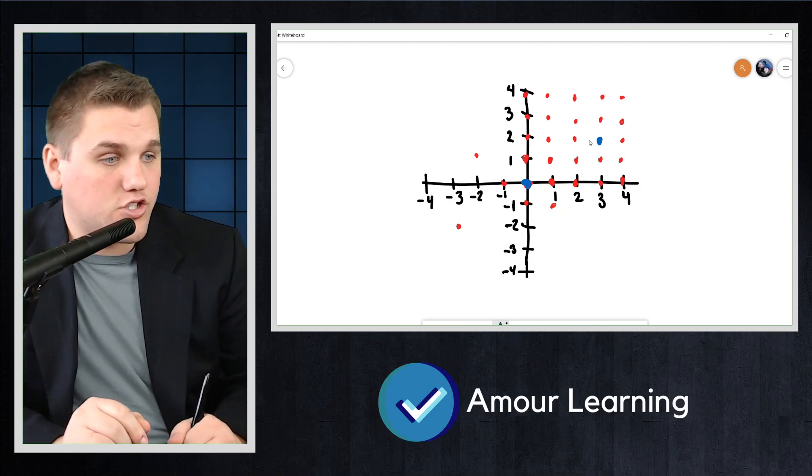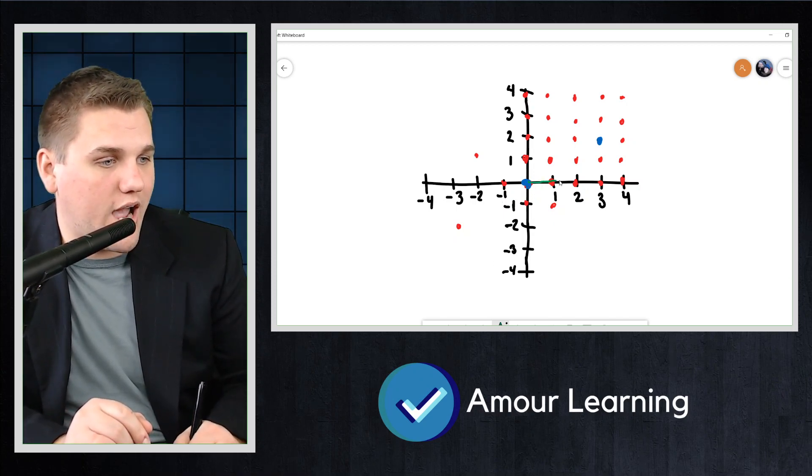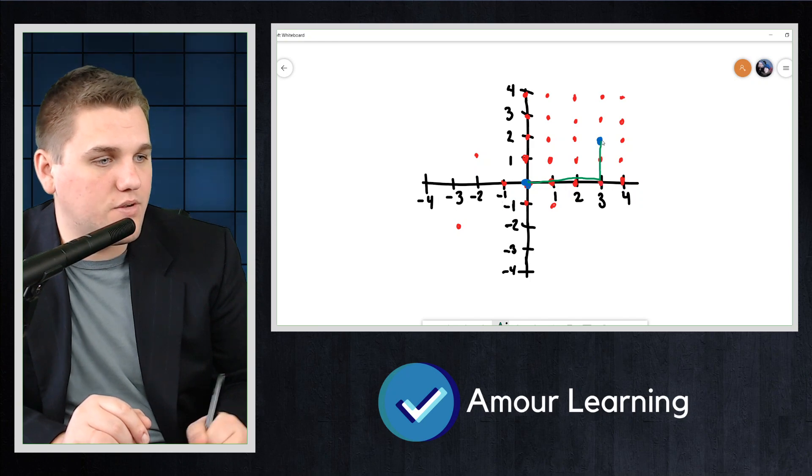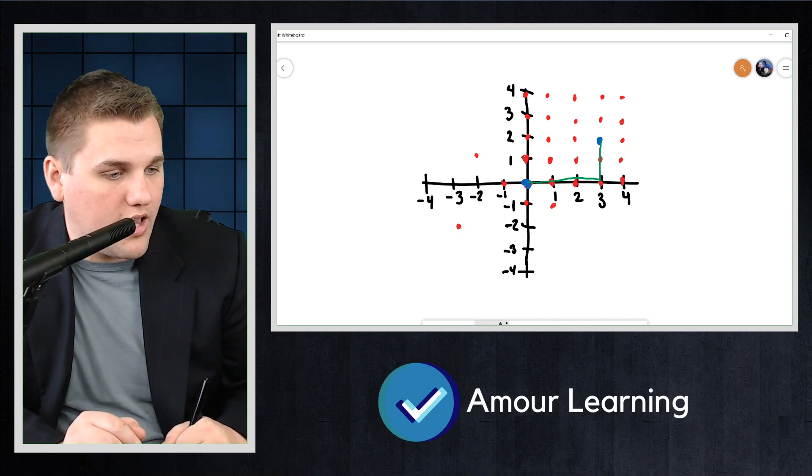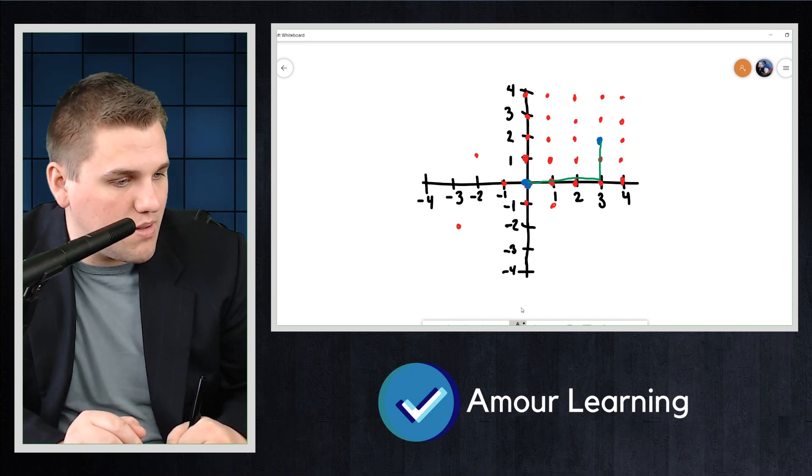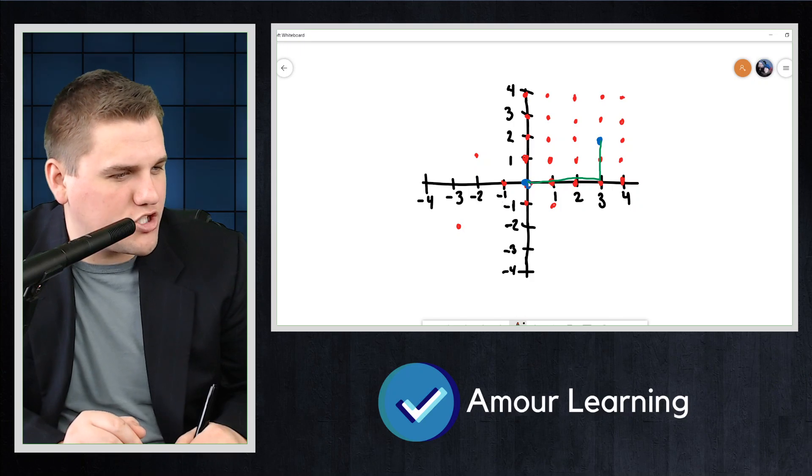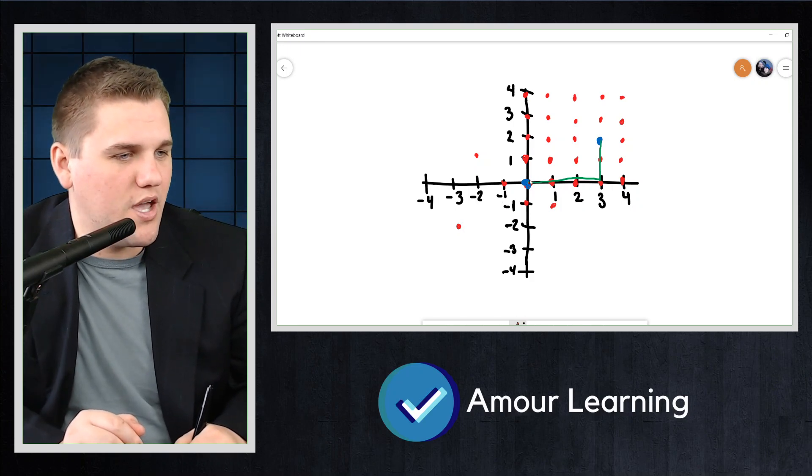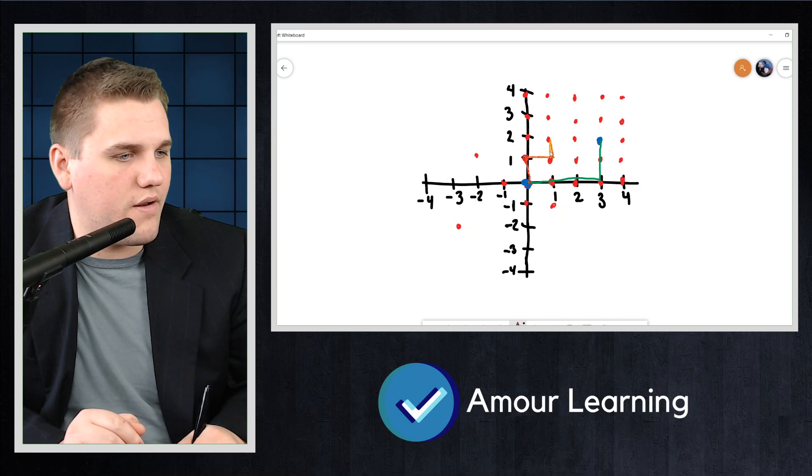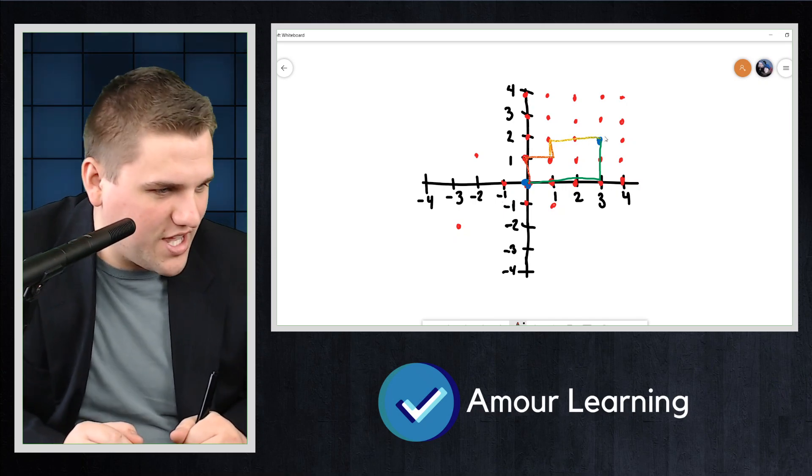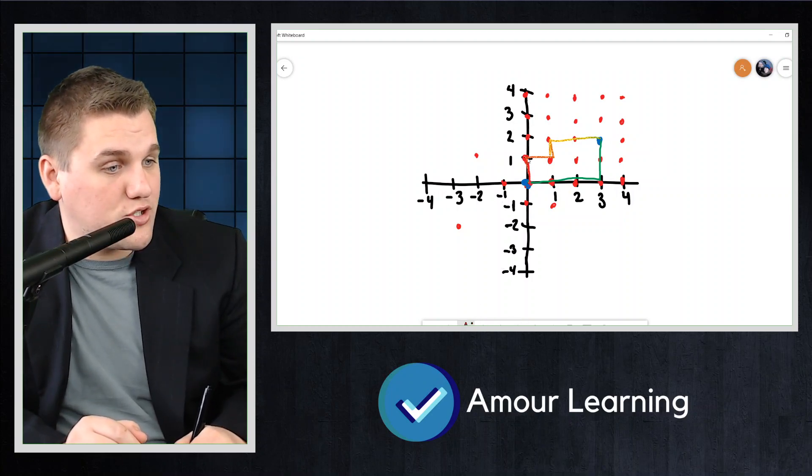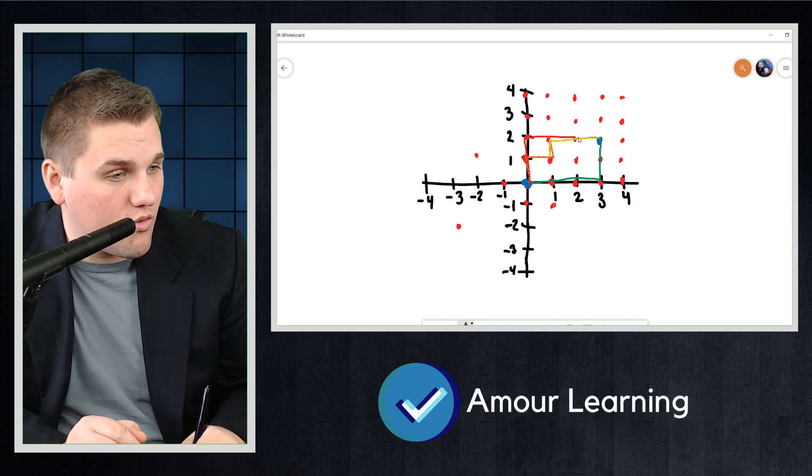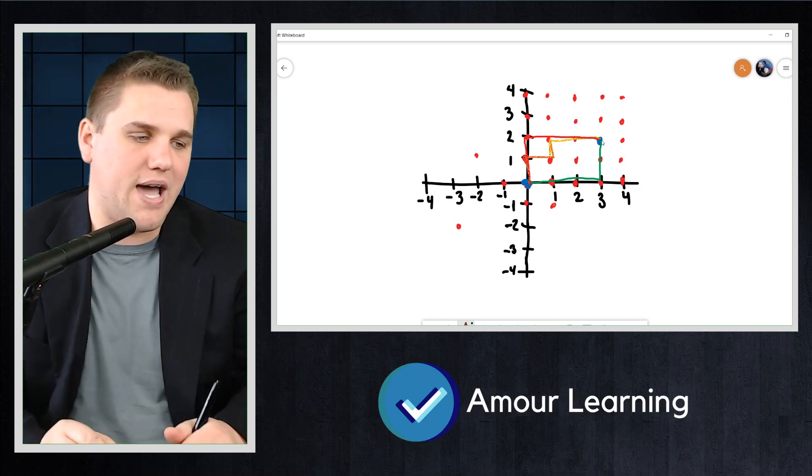So we can go to the right three and up two. That's one way of getting there. That's one lattice path. Let's use a different color for another one. We can go up one, over to the right, up one, over to the right two. That's a very unique color. We can do up two, over to the right three. Those are three different lattice paths.